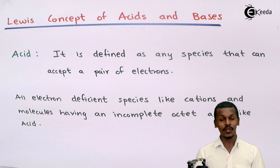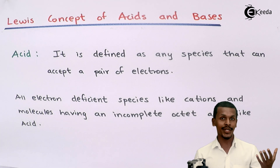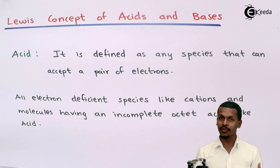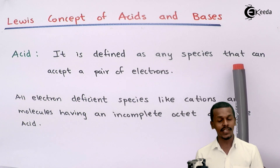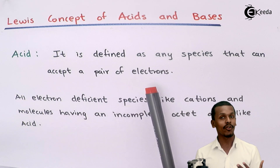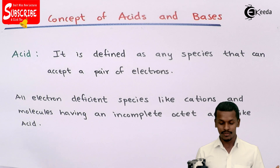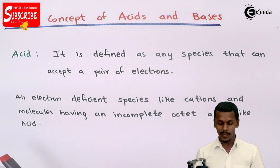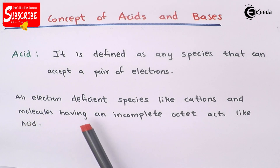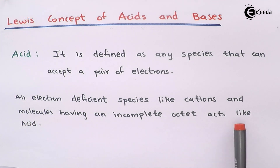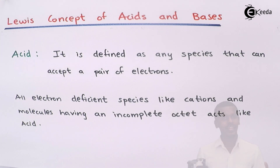According to the Lewis concept, an acid is defined as any species that can accept a pair of electrons. We could also say that all electron-deficient species — like cations and molecules having an incomplete octet — act like an acid.